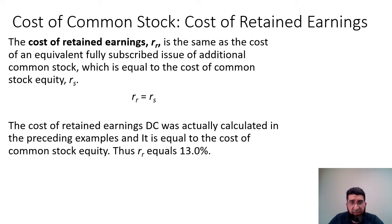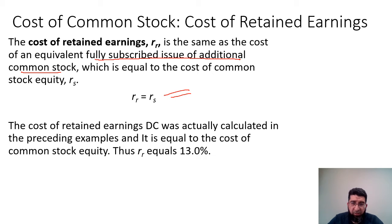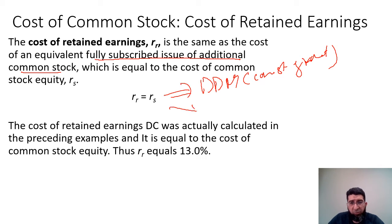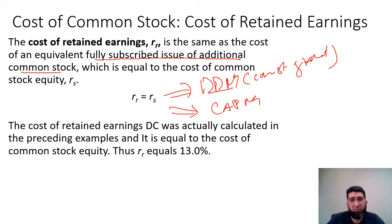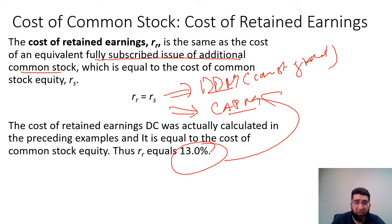What is the cost of retained earnings? The cost of retained earnings is the same as the cost of an equivalent fully subscribed issue of additional common stock. In essence, it is the same RS calculated from the dividend discount model with constant growth or through the Capital Asset Pricing Model. This RS equals 13%, as we already calculated using both methods.